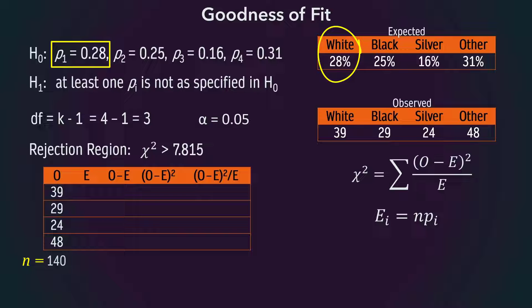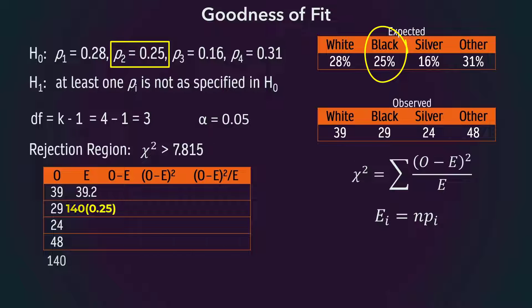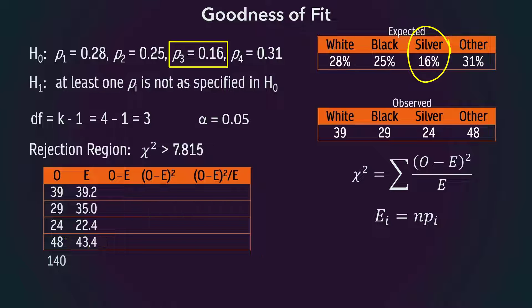Therefore, for white, the expected frequency is 140 times 0.28, which gives 39.2. For black, 140 times 0.25 gives 35. For silver, we have 22.4. And for other, we have 43.4.